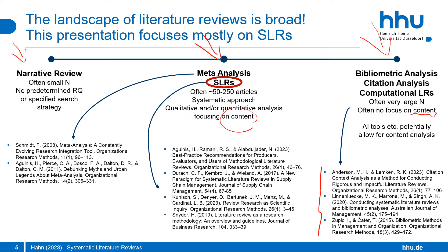Systematic literature reviews focus on content and are usually more qualitative — looking at different findings, trying to identify gaps or focus areas in the literature, or focusing on theory. If you're interested in meta-analysis, there are specific method articles I can point you to. The second video in this series covers how to identify relevant literature, which is relevant for meta-analyses, systematic literature reviews, and potentially bibliometric or computational ones as well.